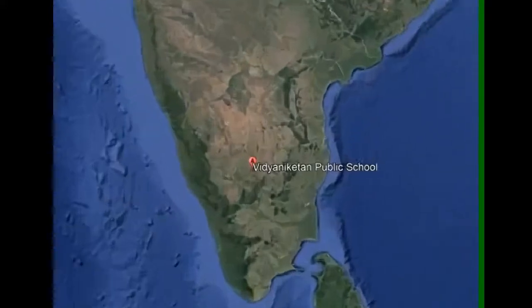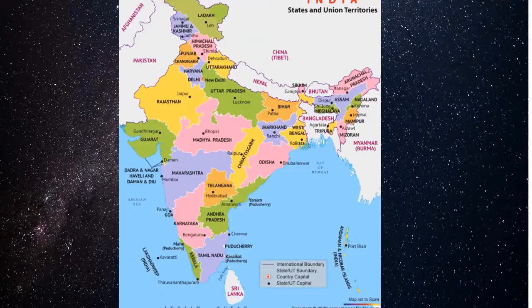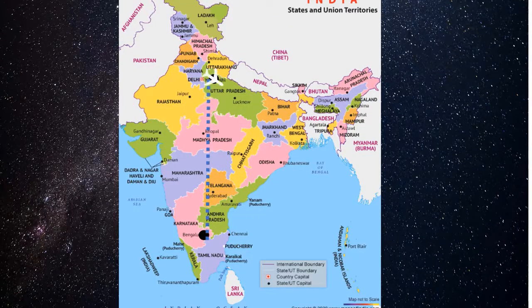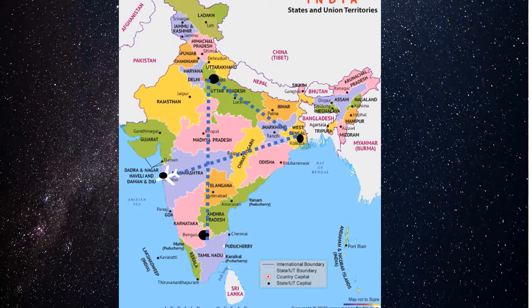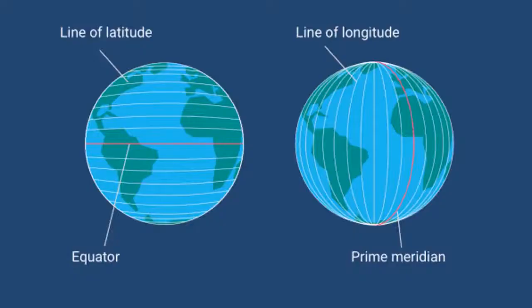Suppose you wish to locate our school in Google Earth — how does Google take you to the exact location? Suppose an aeroplane starts from Bengaluru to New Delhi, then to Kolkata, and eventually reaches Mumbai — how does the pilot know which route to take in the sky? How could the Indian Air Force precisely locate the terrorist camp at Balakot in Pakistan and destroy it? The answer is: they all have knowledge of latitudes and longitudes.